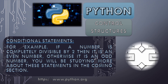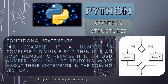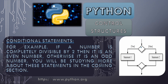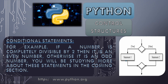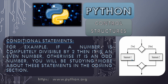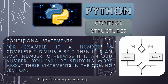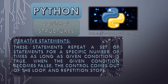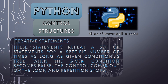In the conditional example: if the condition is true then statement one executes and the control moves accordingly; if the condition is false then statement two executes and the flow of execution moves accordingly. The third category is iterative statements, which repeat a set of statements for a specific number of times as long as the condition is true.